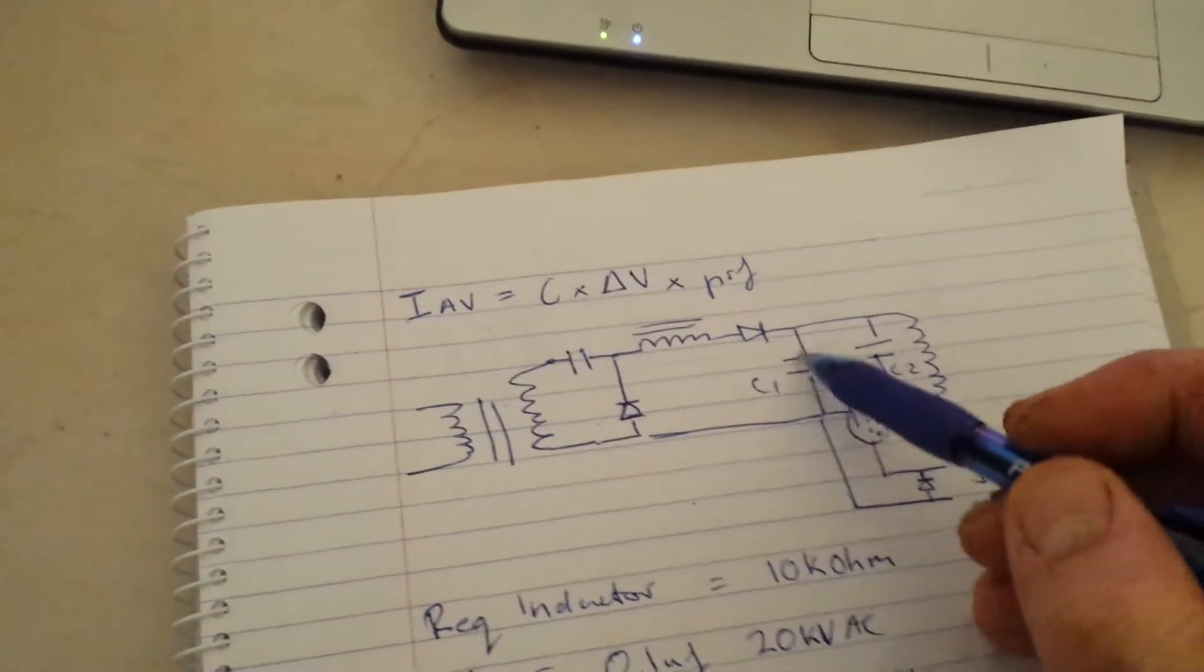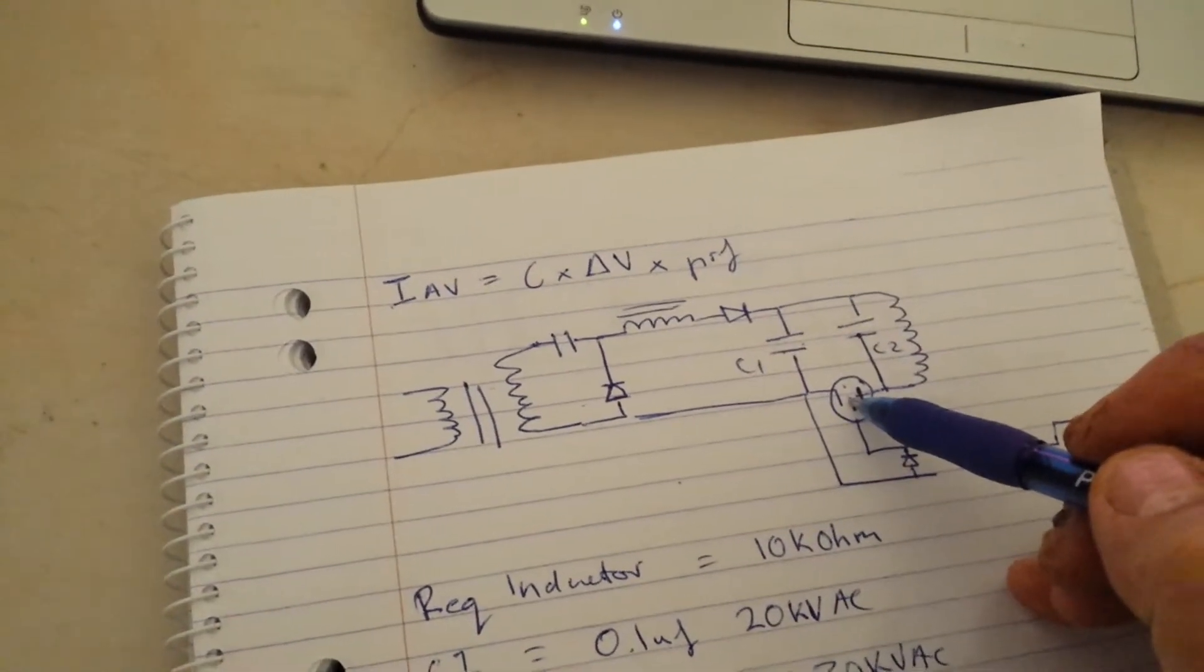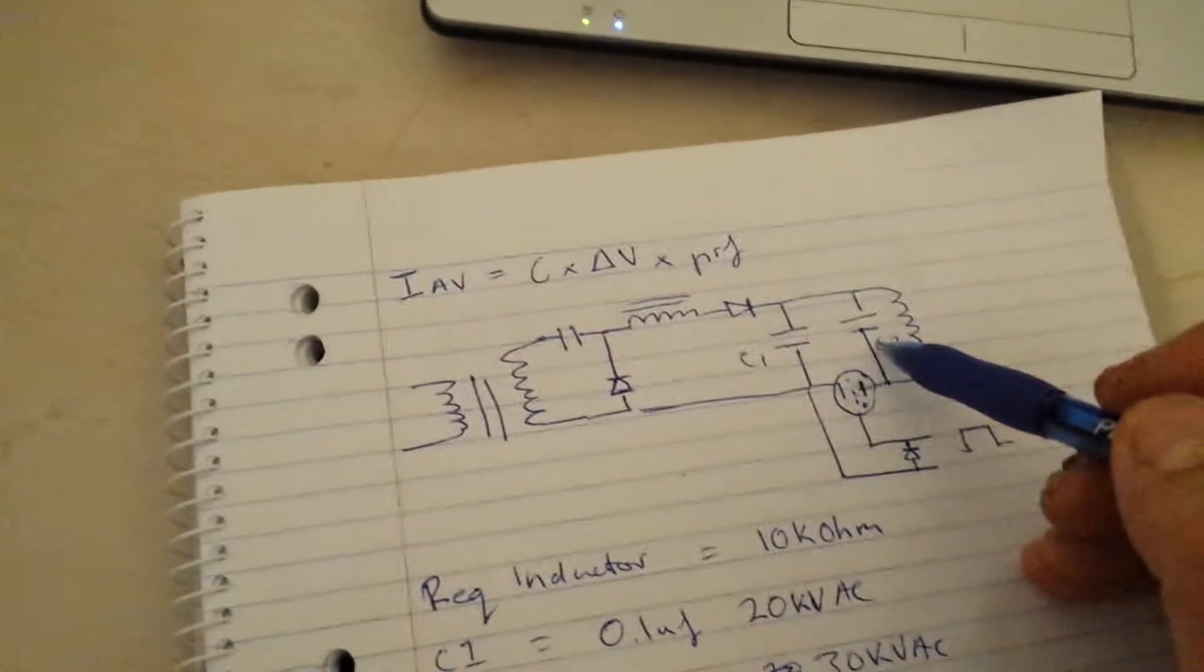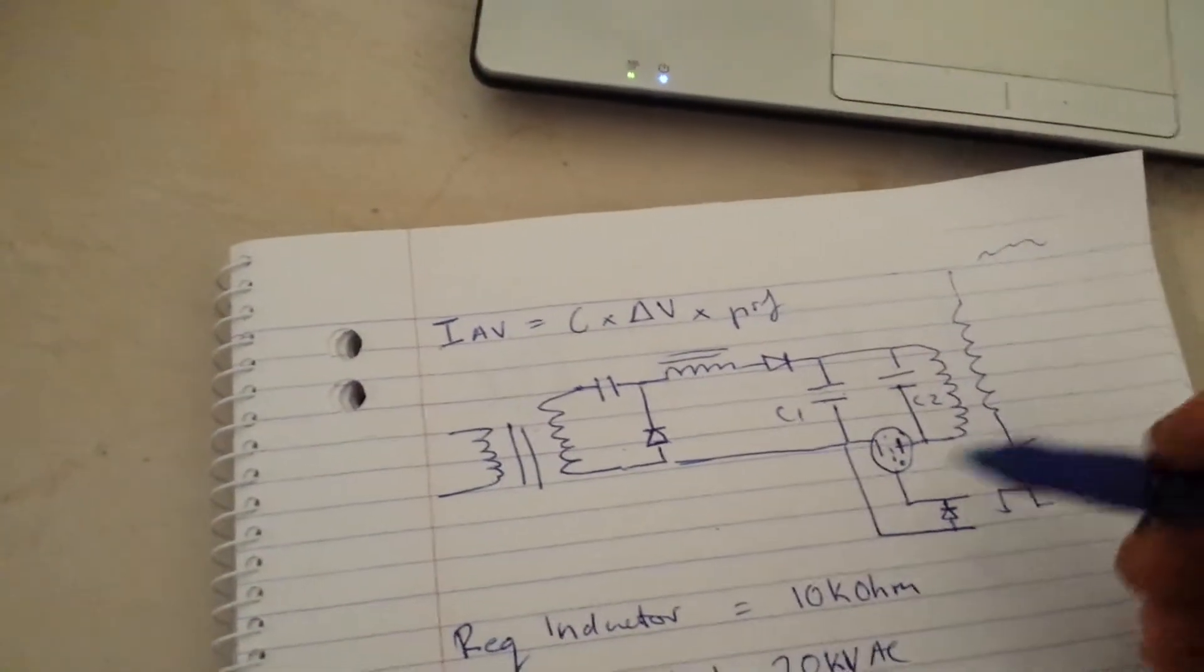This capacitor being fully charged, I discharge it through this Thyrotron, and the energy gets trapped in this LC network. And then we have our spark output.